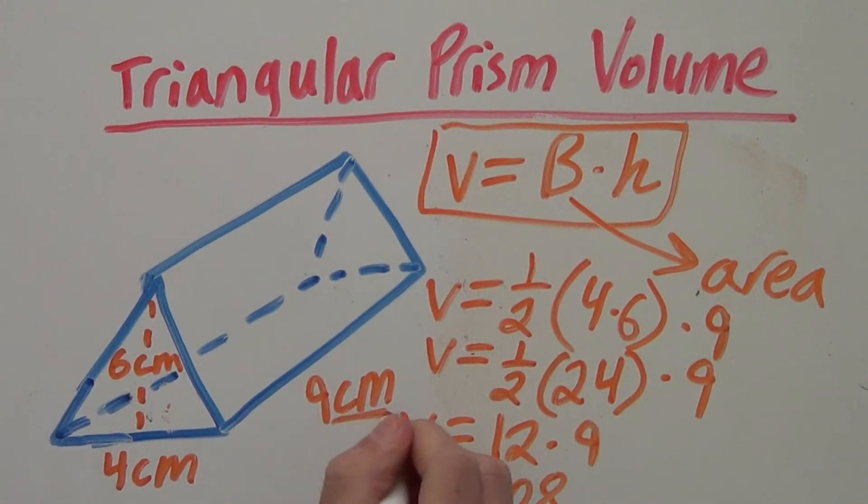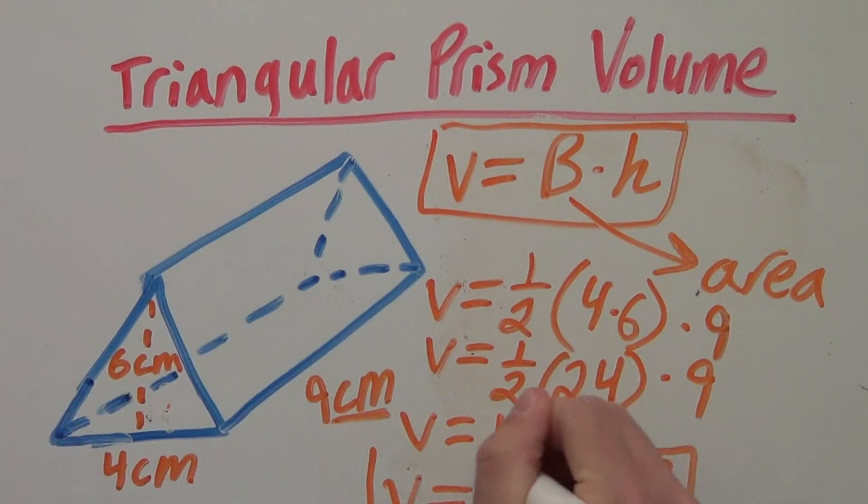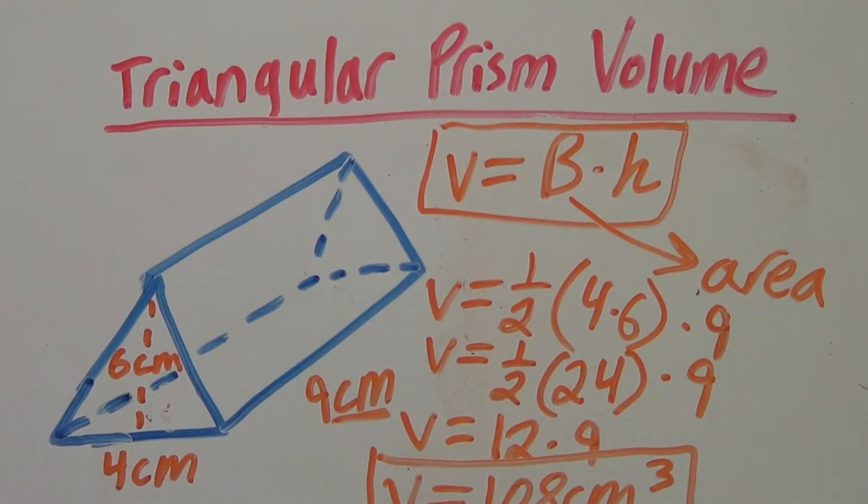We're using centimeters so we write centimeters and it's volume so we write a little 3 for cubed. And that's how you find the volume of a triangular prism.